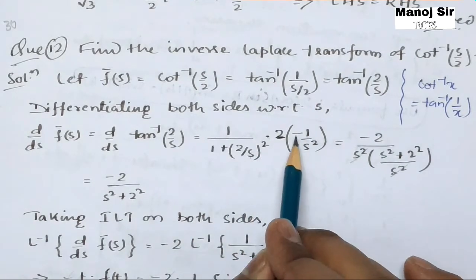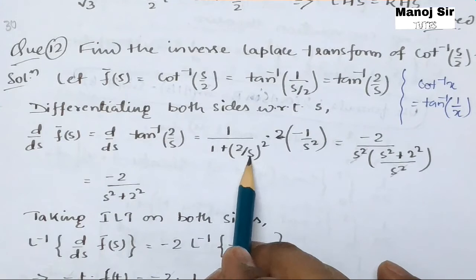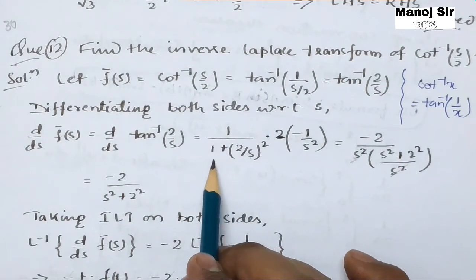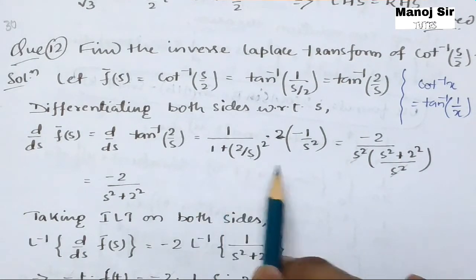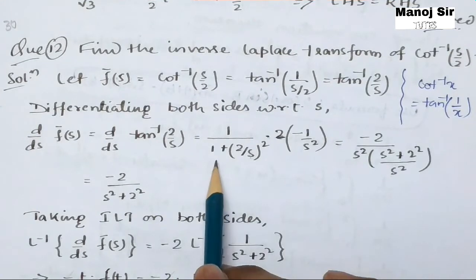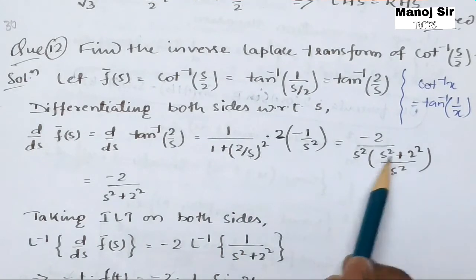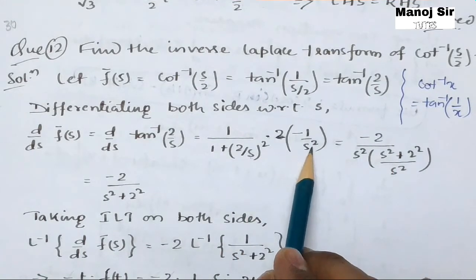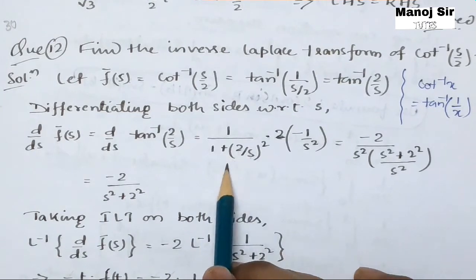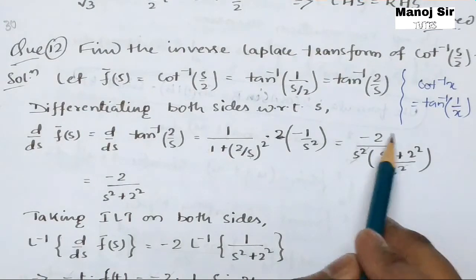So d/ds of tan⁻¹(2/s) = [1/(1 + (2/s)²)] × (−2/s²). Taking s² as common in the denominator, we get −2/s² over (s² + 4)/s². The s² terms cancel, leaving us with −2/(s² + 4).